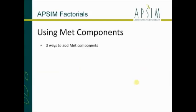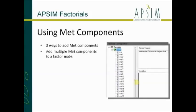I'll give you a few examples of how to use those factor nodes. The first one is the MET component - there are actually three different ways we can use it. The first way is to drag the MET node and drop it onto one of those factor nodes. If you wanted to represent multiple locations with multiple MET files, you just keep dragging them onto that node and it'll set up a multiple number of them.